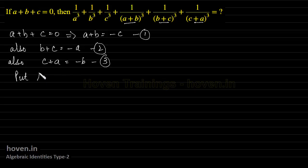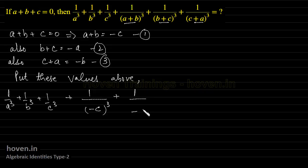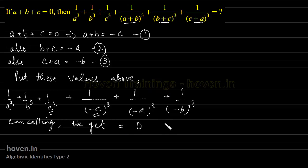Put these values above. We get 1 by a cubed plus 1 by b cubed plus 1 by c cubed, and since a plus b is minus c, it becomes 1 by minus c whole cubed plus 1 by minus a whole cubed plus 1 by minus b whole cubed. Now cancellation can be done: 1 by a cubed cancels, 1 by b cubed cancels, 1 by c cubed cancels. So we are left with 0 as the answer.